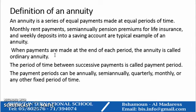When payments are made at the end of each period, the annuity is called ordinary annuity. The period of time between successive payments is called the payment period. The payment period can be annually, semi-annually, quarterly, monthly, daily, or whatever.